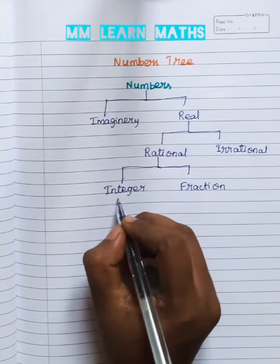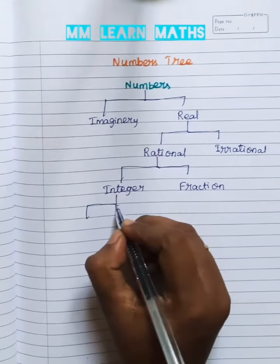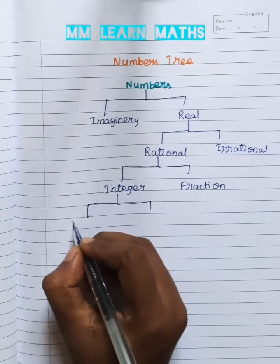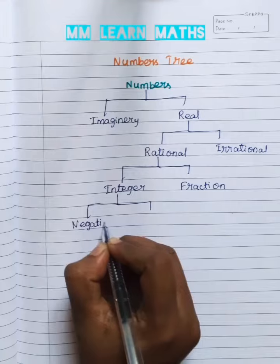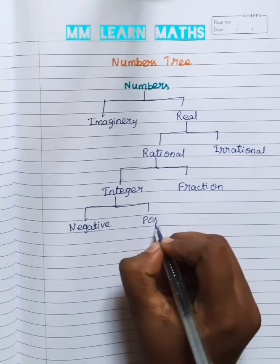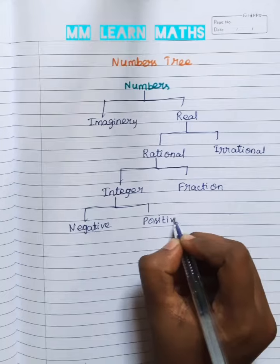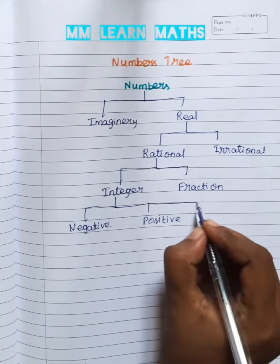Integer, two type. Negative integer. Positive integer and then zero.